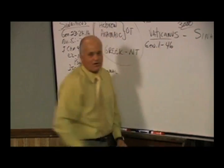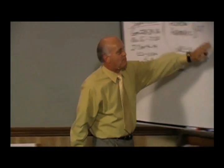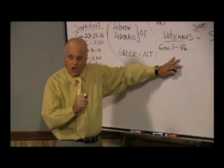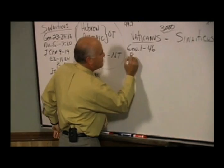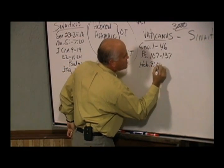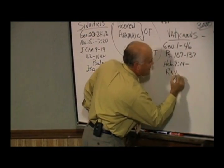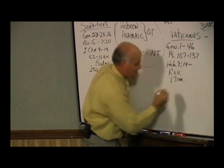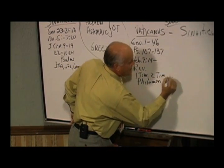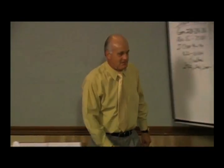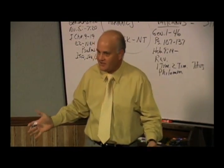Here's what's missing in Vaticanus: Genesis chapters 1 to 46, Psalm 105 to 137, everything after Hebrews 9:14, the entire book of Revelation, the entire book of 1 Timothy, the entire book of Philemon, and also 2 Timothy and Titus — all missing. A few of those happen to be dispensation-of-grace epistles. When they print a Bible based on Vaticanus, they won't print it with those things missing — they'll fill them in, because no one will buy a Bible missing those portions. It's not about producing the Word of God; it's about making money.